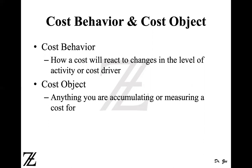Cost object. Another important aspect that you need to know is the cost object. Cost object is anything you are accumulating or measuring a cost for. For example, if you're trying to find the cost of a computer, the computer is a cost object. If you're trying to find the cost of a department, then the department is the cost object. If you're trying to find the cost of hiring a professor, or a lawyer, then each of those is a cost object. So, anything you're trying to accumulate or measure a cost for is known as a cost object.